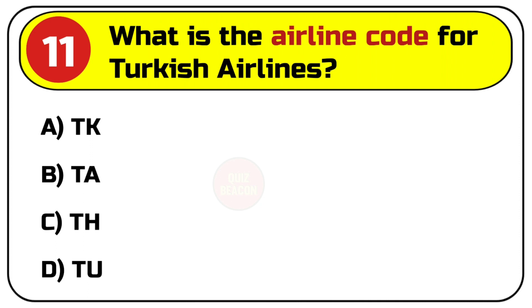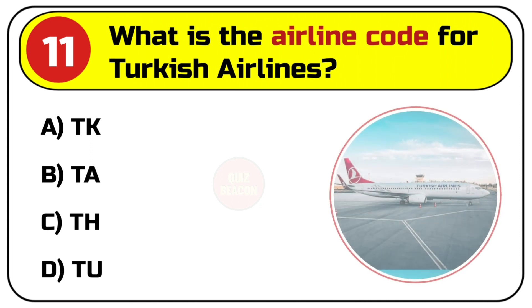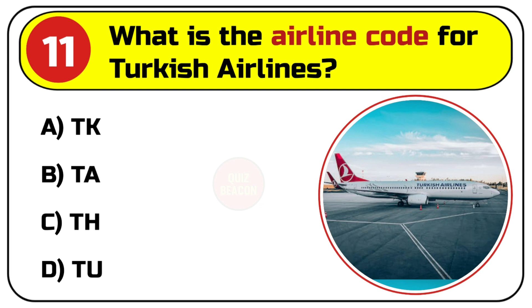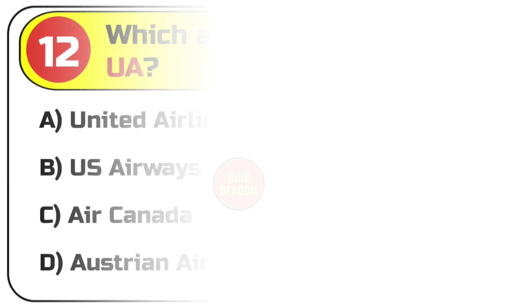Question number eleven: what is the airline code for Turkish Airlines? Options are A. TK, B. TA, C. TH, D. TU. Correct answer is A. TK.